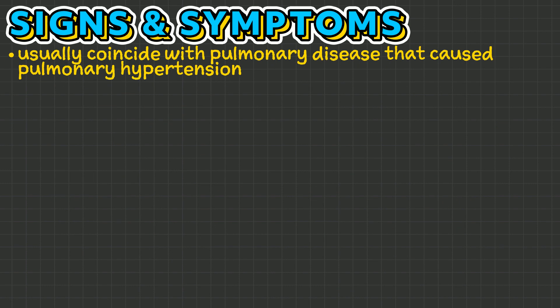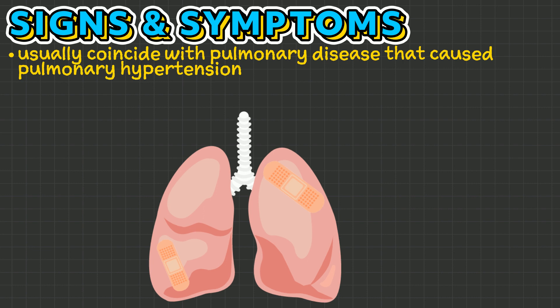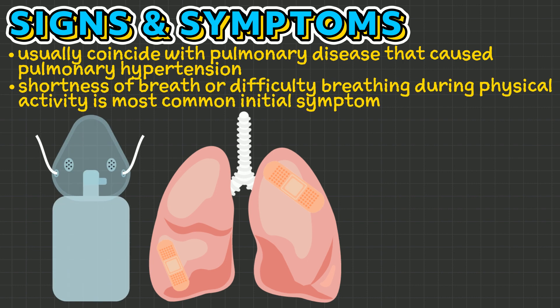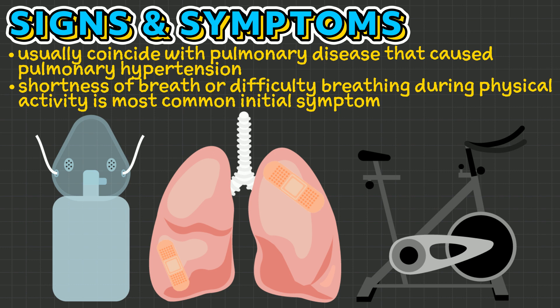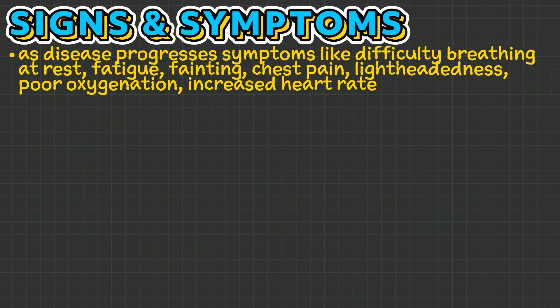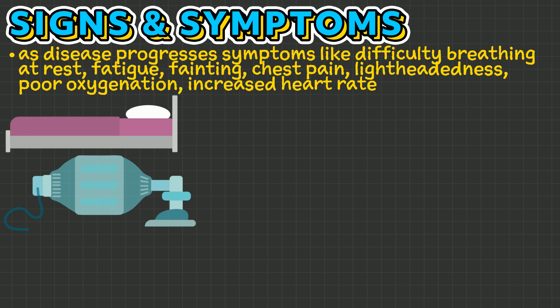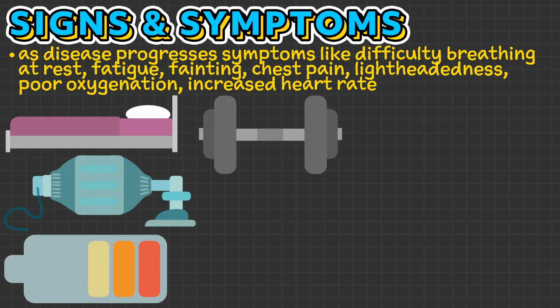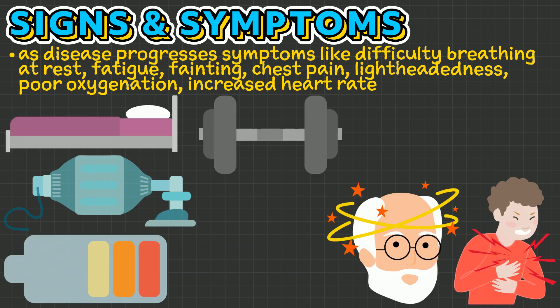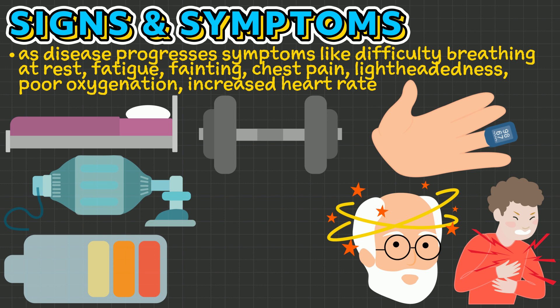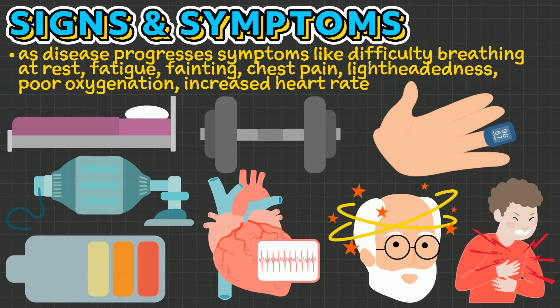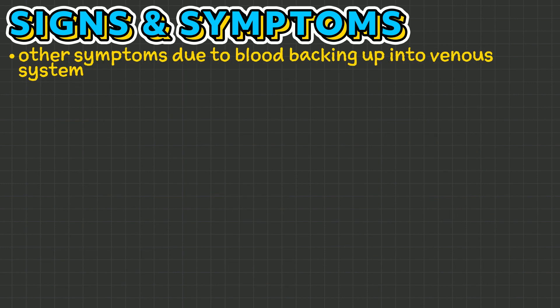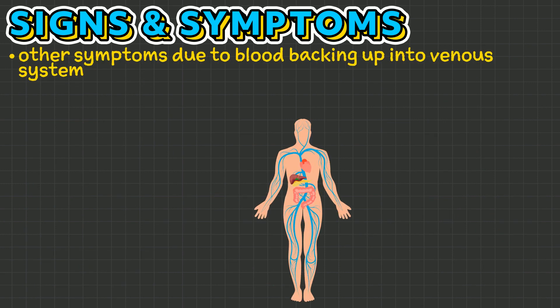Signs and symptoms of cor pulmonale usually coincide with the pulmonary disease that caused pulmonary hypertension. Shortness of breath or difficulty breathing during physical activity is the most common initial symptom. As the disease progresses, other symptoms like difficulty breathing at rest, fatigue, fainting, chest pain, lightheadedness, poor oxygenation, and increased heart rate may occur.